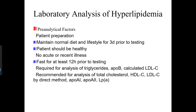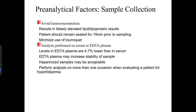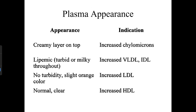Pre-analytical factors: the patient must fast, maintain a normal diet and lifestyle for three days prior, be healthy with no acute illness, and fast for at least 12 hours prior to the lipid panel — required for triglycerides, Apo B, and calculated LDL-C. Plasma appearance provides clues: a creamy layer indicates elevated chylomicrons; turbid or milky plasma indicates elevated VLDL or IDL; slightly orange plasma indicates elevated LDL; clear plasma indicates elevated HDL.